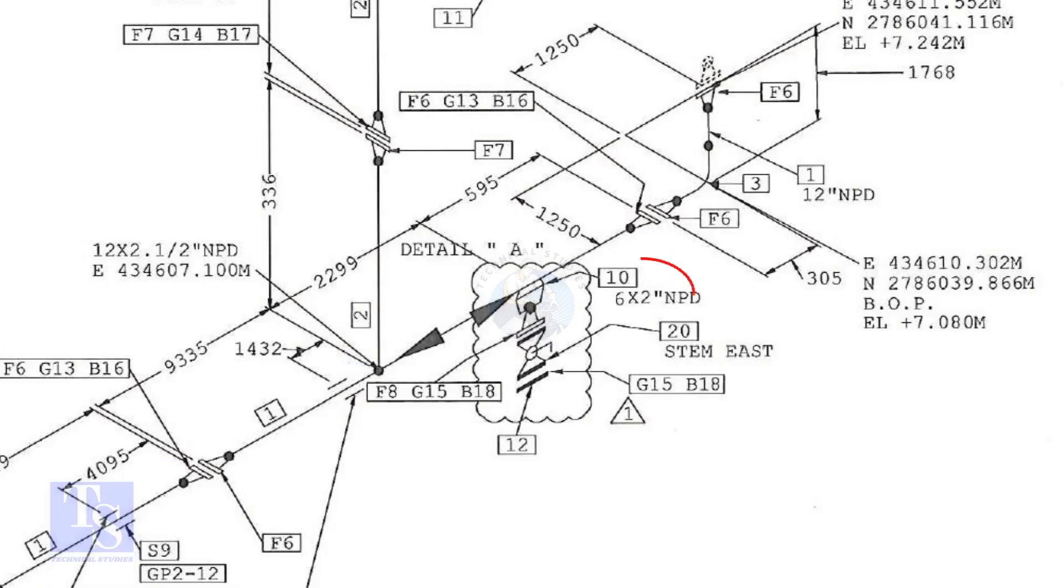In this drawing, the size of the weldolet is 6 inch into 2 inch. Let us check what is item number 10 in the description.